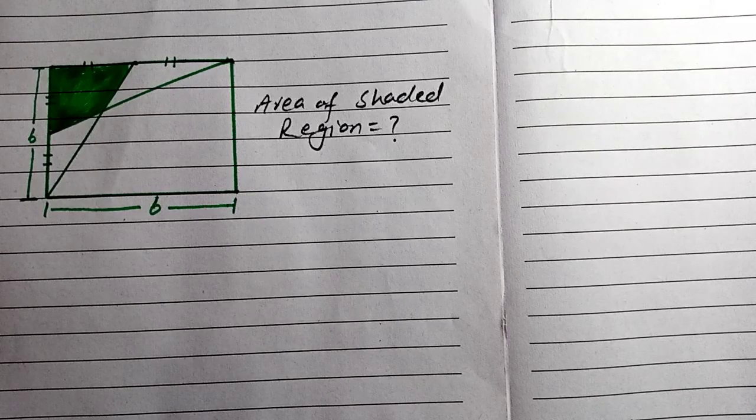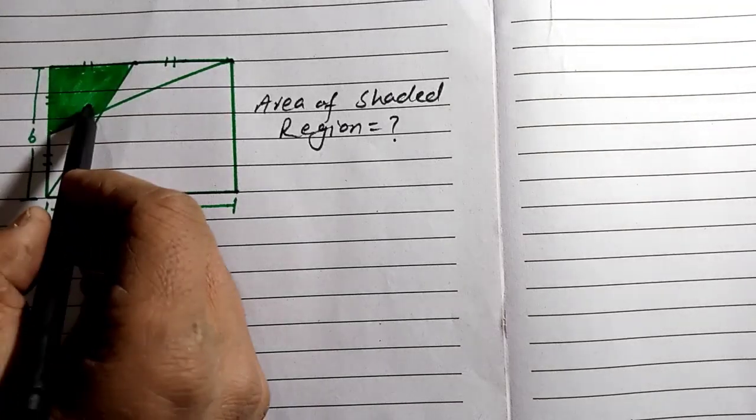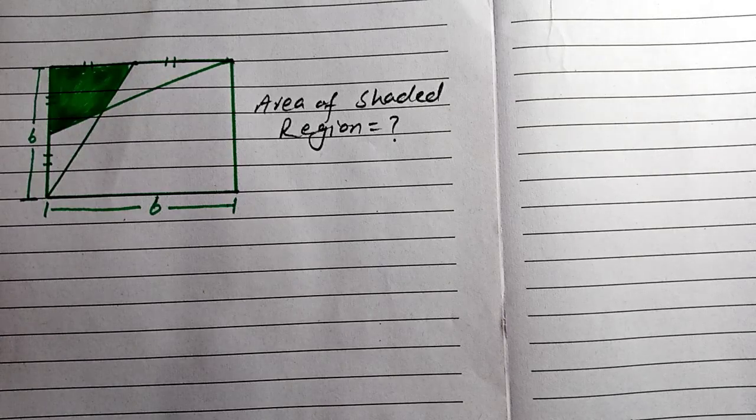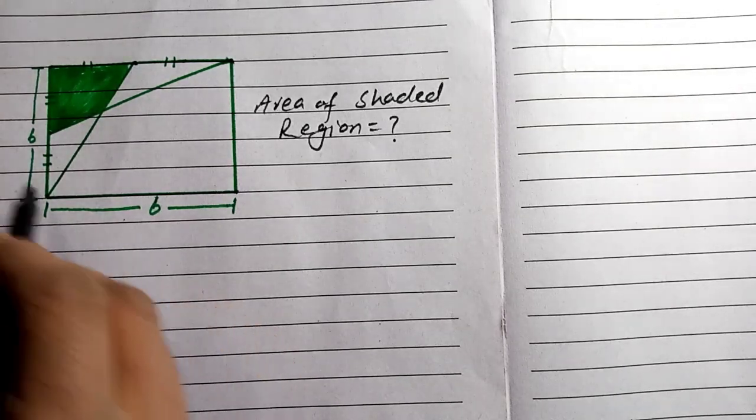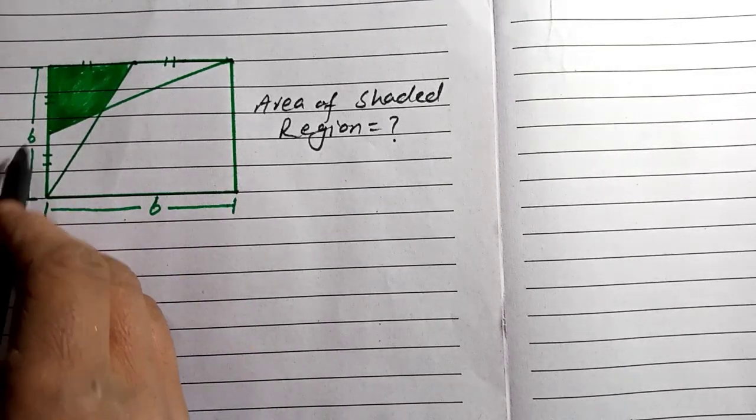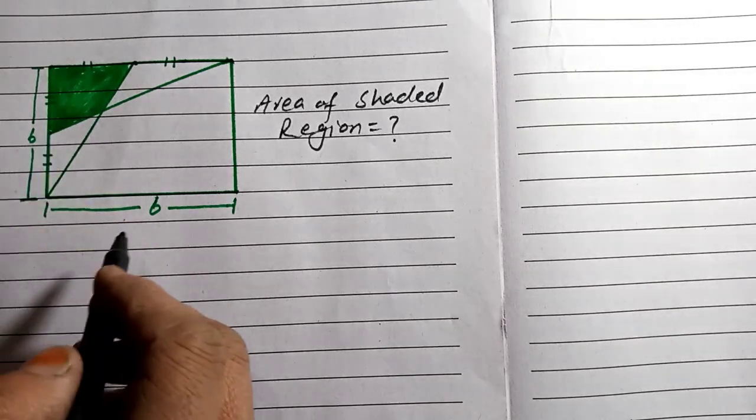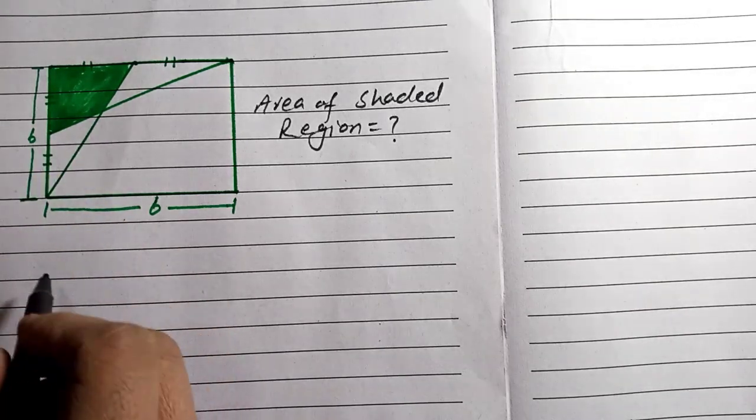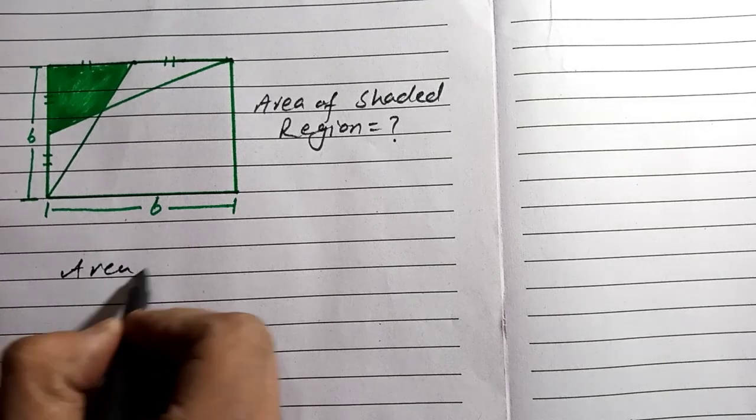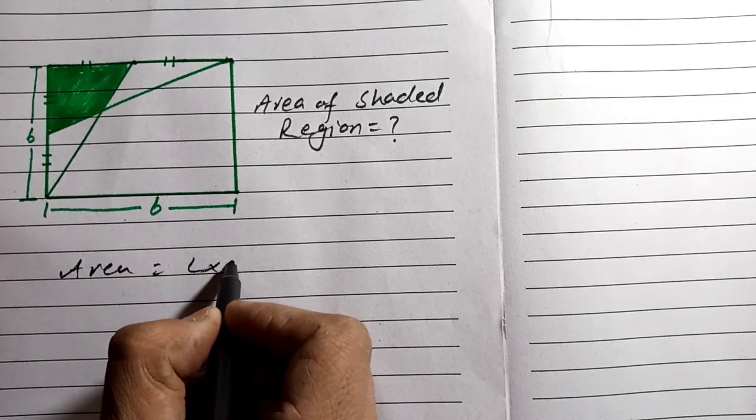In this Math Olympiad geometry problem, we are finding the area of this shaded region. We have given the length of two sides which is 6 units and 6 units. We know that the area of any rectangle is equal to length times breadth.